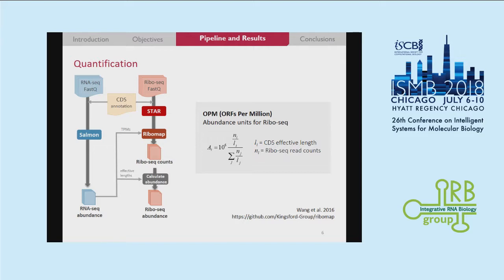And for ribo-seq, we use a software called Ribomob that estimates the ribo-seq counts, taking into account the abundance of RNA-seq. Once we have the counts, we calculate the abundance for ribo-seq similarly to what we do with TPM, but in this case we call it OPMs, or ORFs per million, which are our abundance units for ribo-seq.